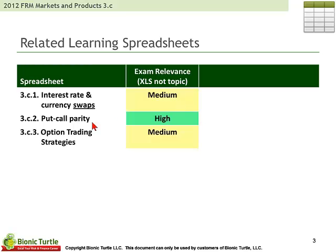3C2 is a pretty simple spreadsheet that builds on Black-Scholes and illustrates the put-call parity that's really so fundamental to option pricing and perspectives on options.